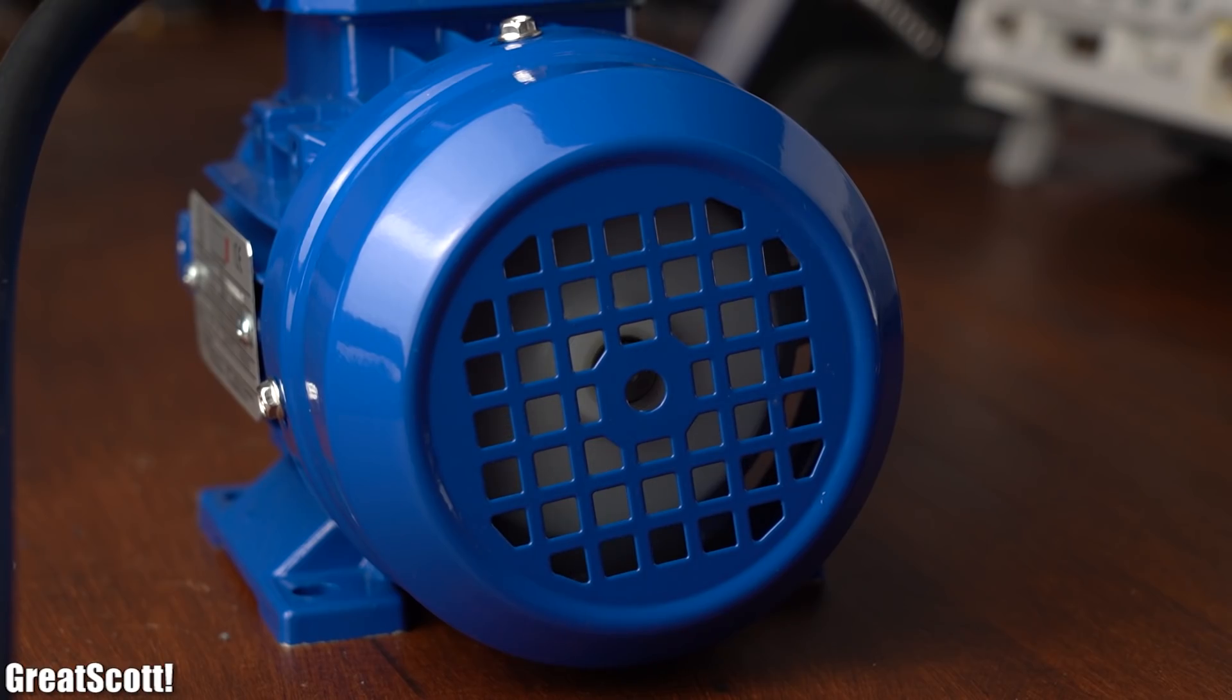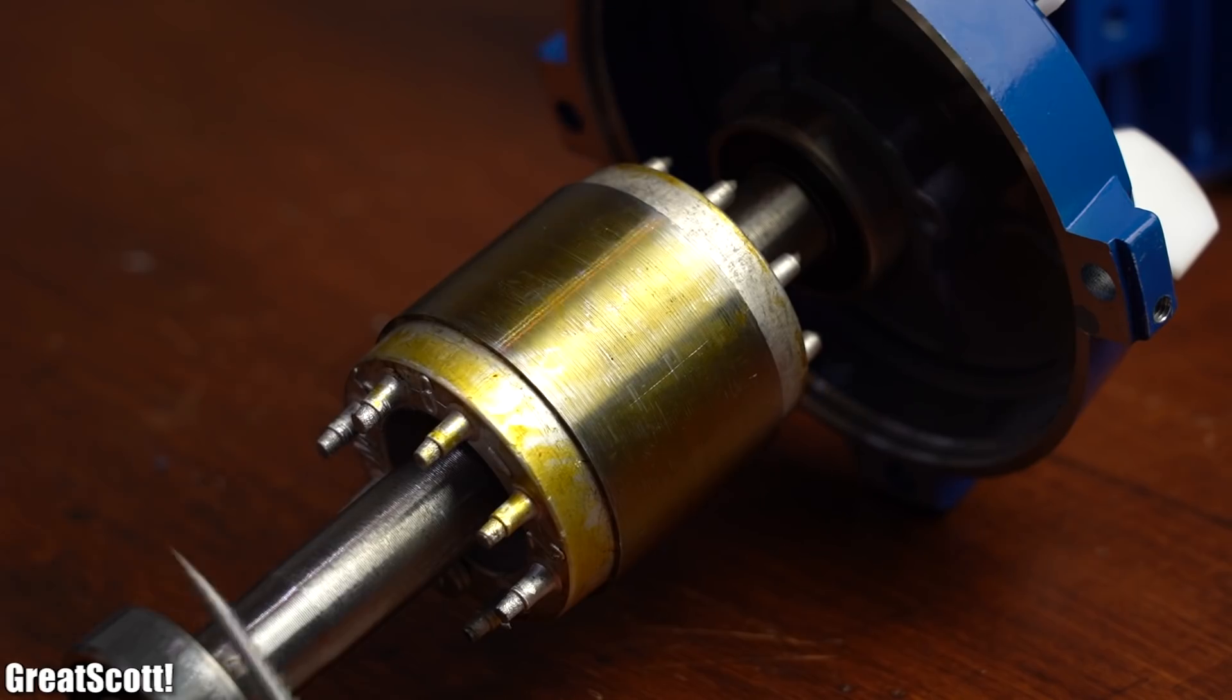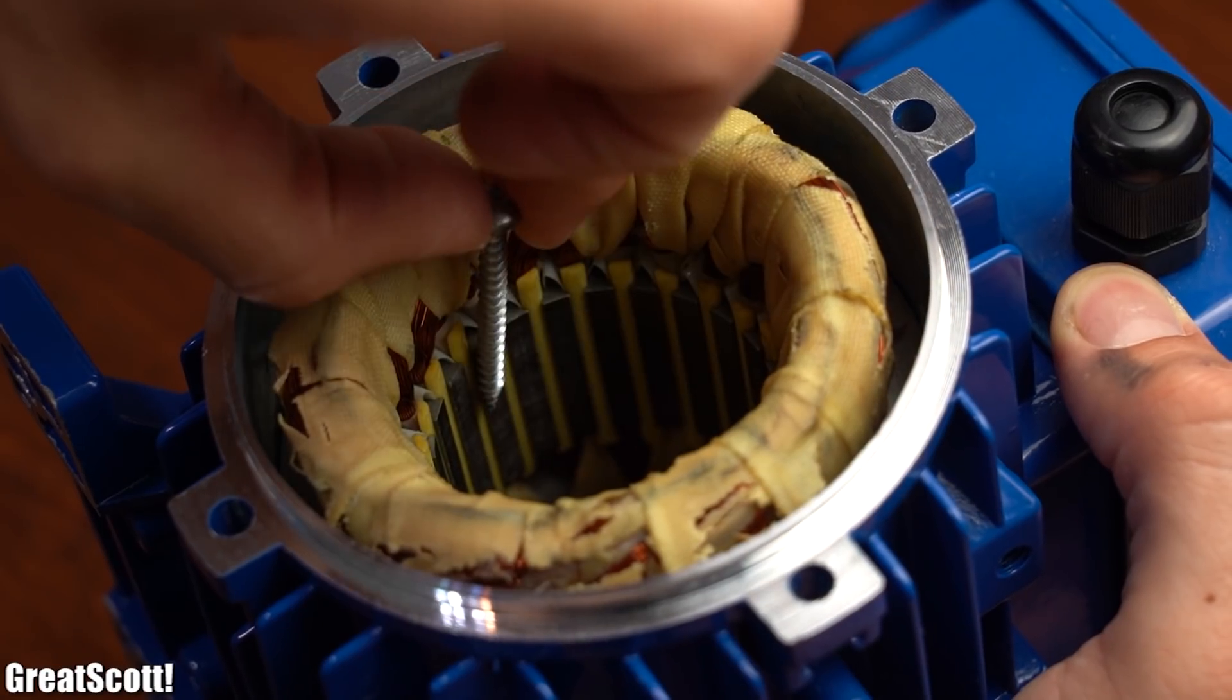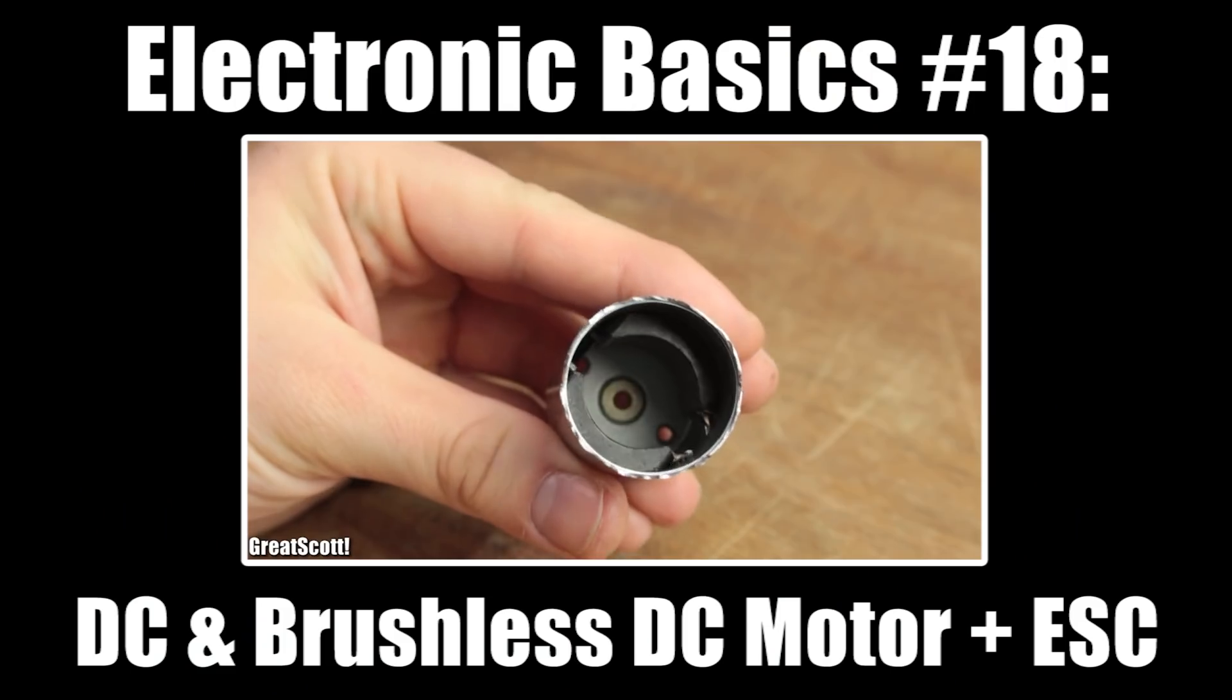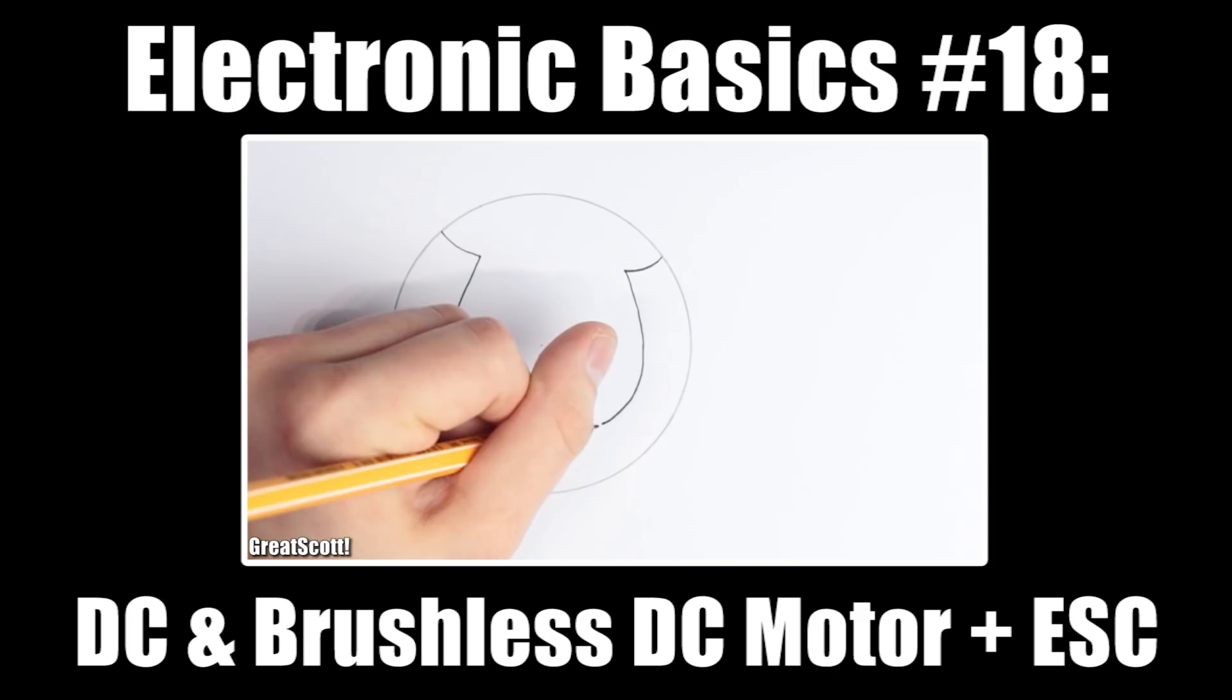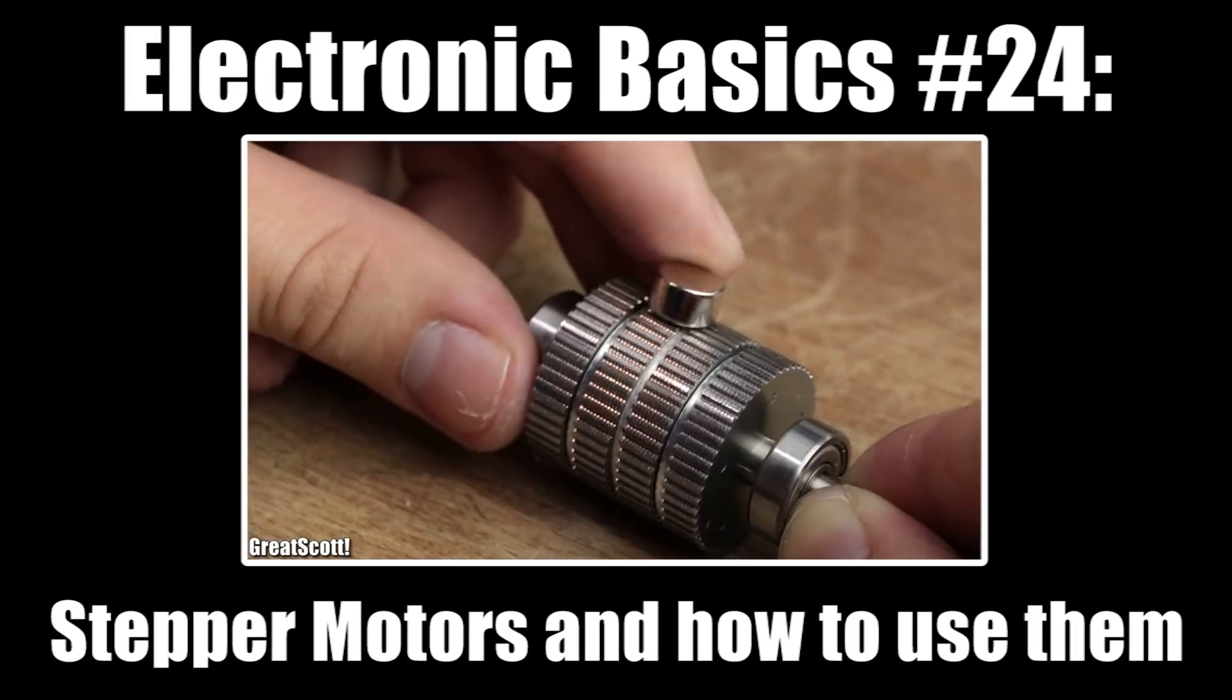But anyway the rotor of our motor rotates perfectly fine. But how does it do that if we consider that neither the stator or rotor consist of permanent magnets? But all the other hobbyist motor types I talked about in previous basics videos always used some kind of magnets in order to create torque.